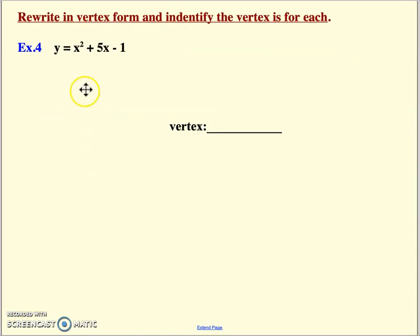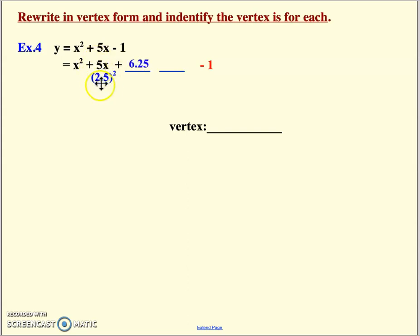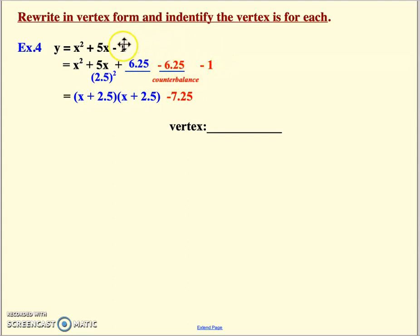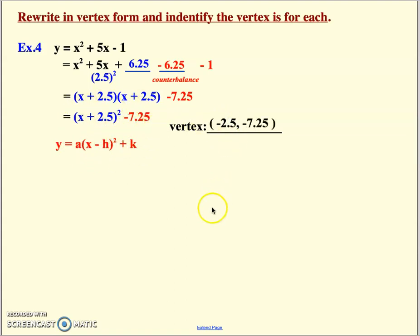Let's run through another example where the a term is 1. Take your number term and slide it off to the side, then create some space. Go half of your middle term squared — half of 5 is 2.5, squared is 6.25. You inserted a number that didn't exist in the original, so you offset it with a counterbalance. The counterbalance and the initial constant combine. Remember: half the middle term is always going to be your factor. Write the two identical factors as a single factor squared, giving x minus h squared and k — vertex form. Grab your vertex.